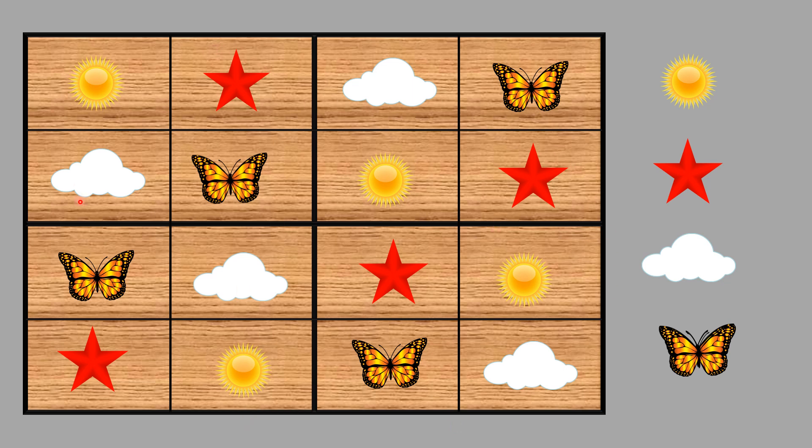And you can see each column has each picture only once. Similarly, rows and the inner squares. So here we go. I hope you enjoyed this game.